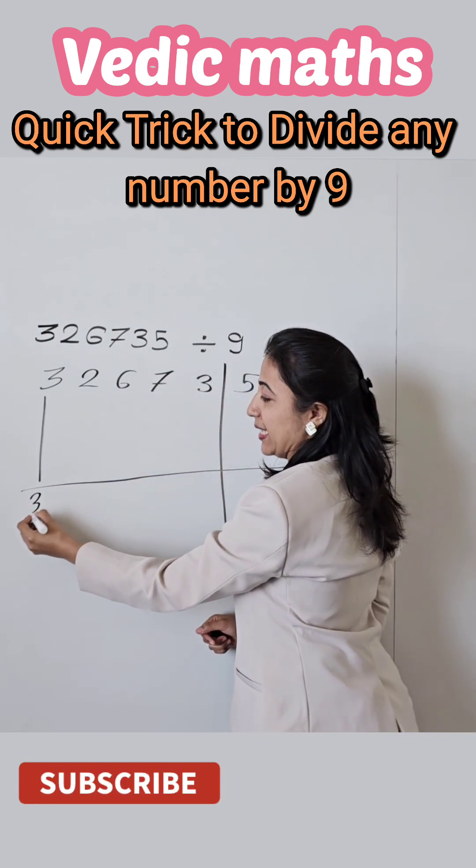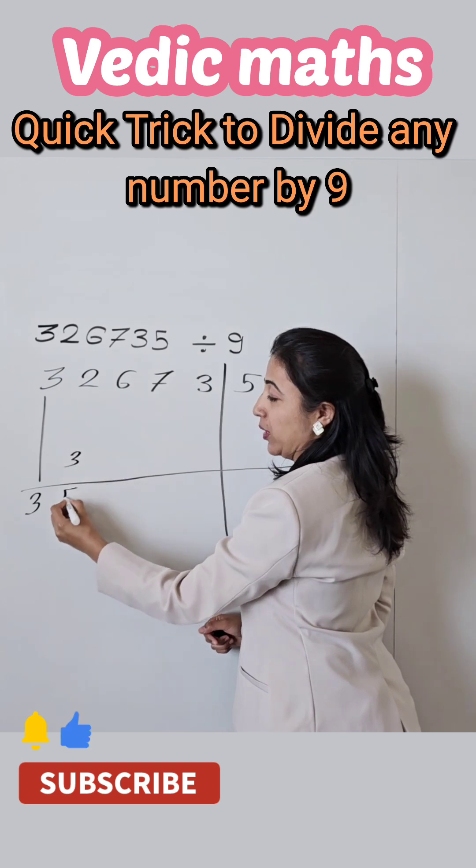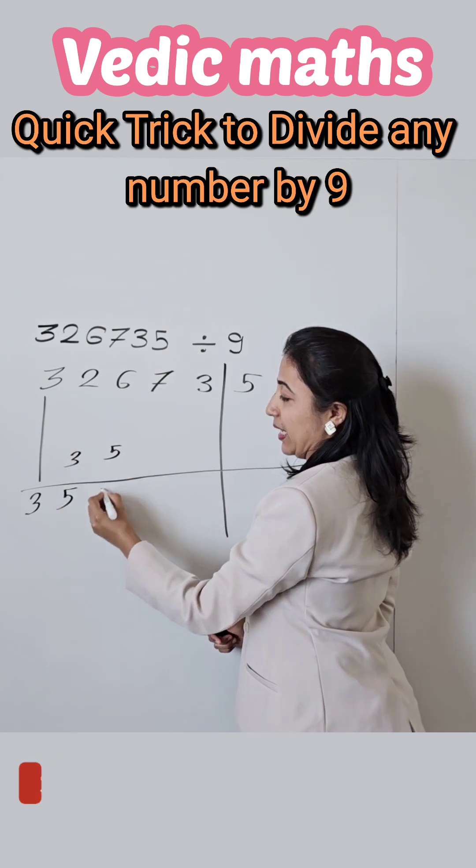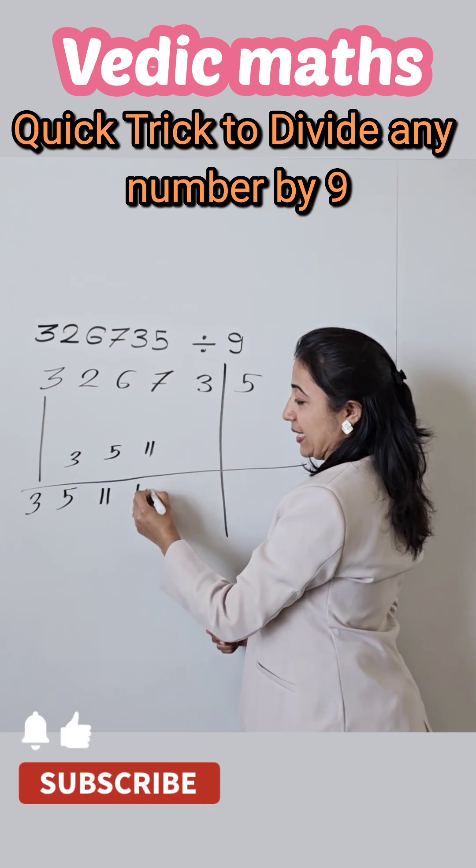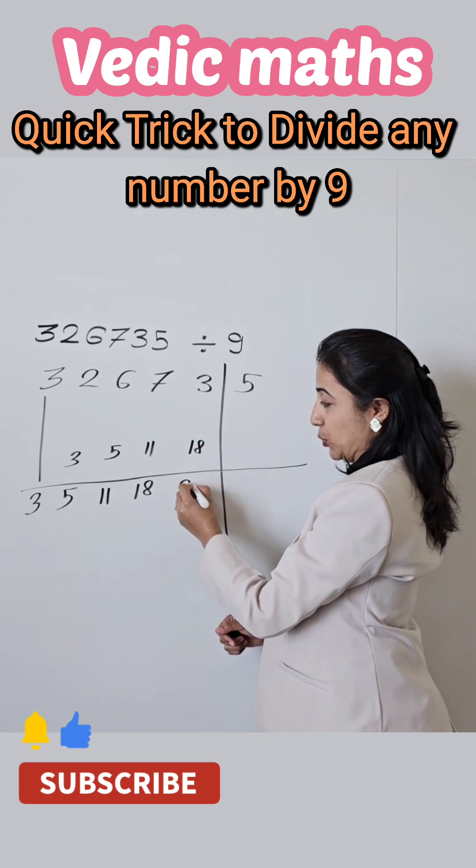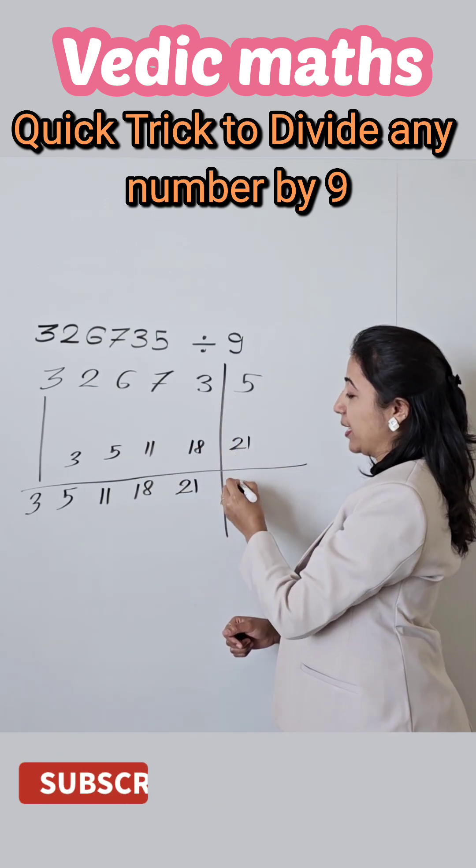Here our first number 3 as it is. 3 plus 2 is 5. 5 plus 6 is 11. 11 plus 7 is 18. 18 plus 3 is 21. 21 plus 5 is 26.